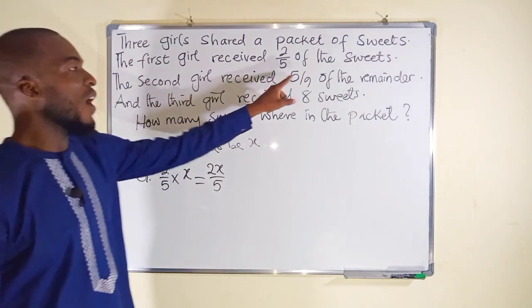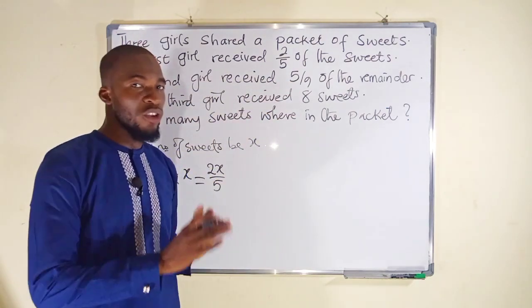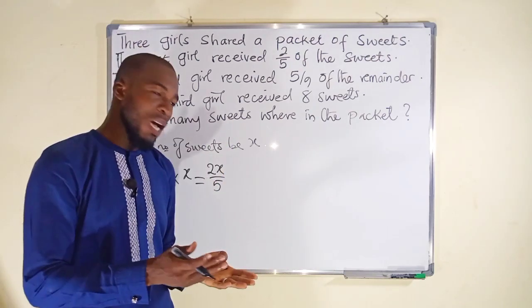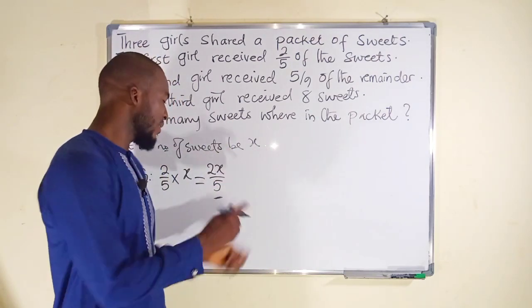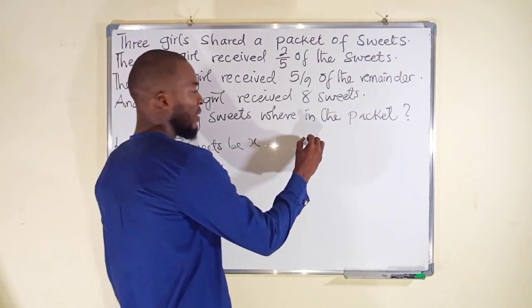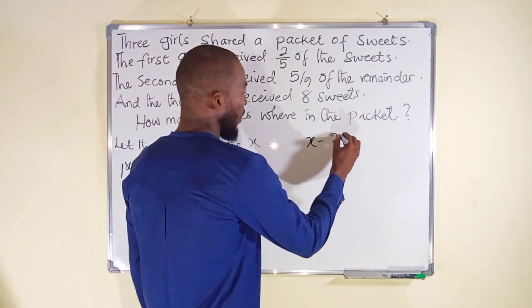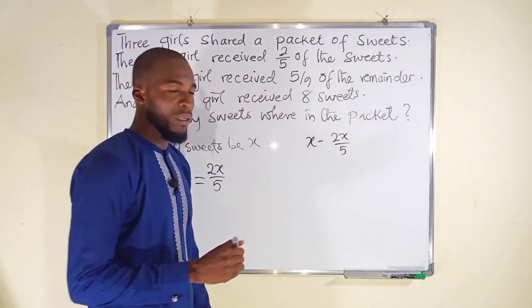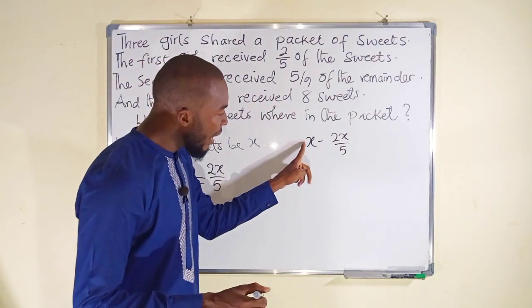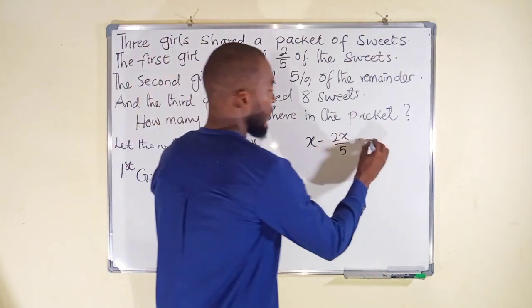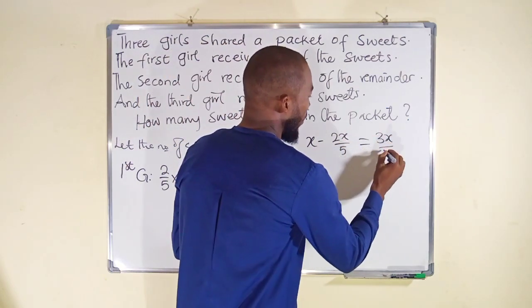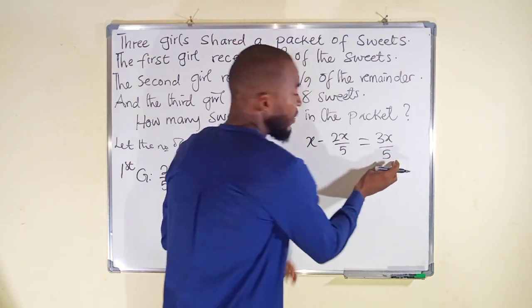The second girl received five over nine of the remainder, but we don't know the remainder. To find out the remainder, we can just subtract this out of the total sweets which is x. So x minus 2x over 5 will give us the remainder. Five times x is 5x, minus 2x is 3x over 5. So this is the remainder.